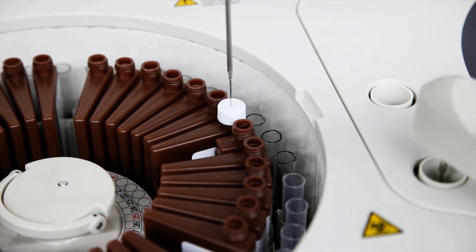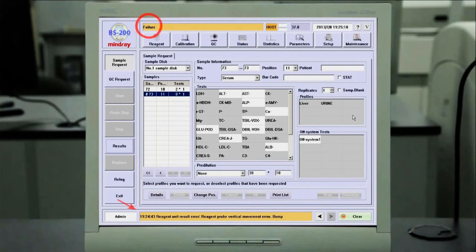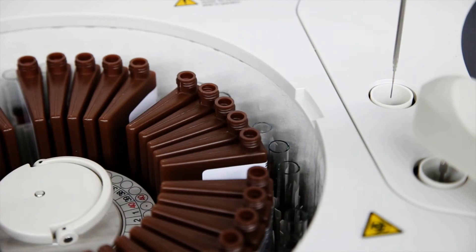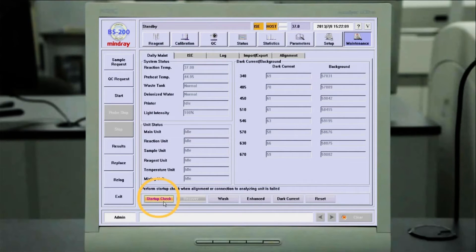Should a probe collision ever happen, the analyzer gives an alarm and stops after trying three times. The operator simply removes the obstruction or resets the instrument with a simple one-touch recovery button.